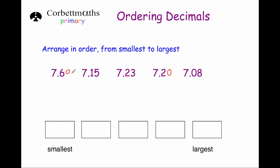Let's look at the units column: we've got 7, 7, 7, 7 and 7, so we can't determine the order from units alone. Looking at the tenths column, we've got 6, 1, 2, 2 and 0. Clearly the number with 0 in the tenths column is going to be the smallest, so 7.08.